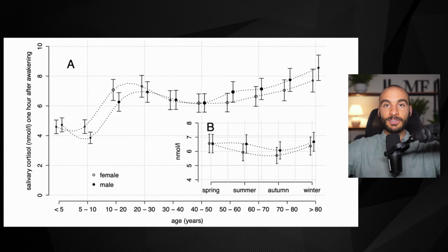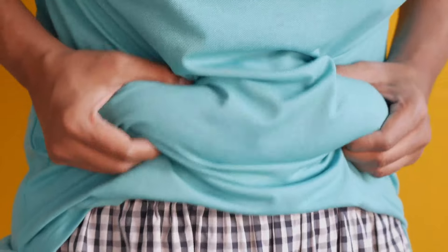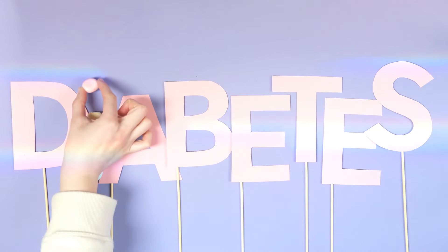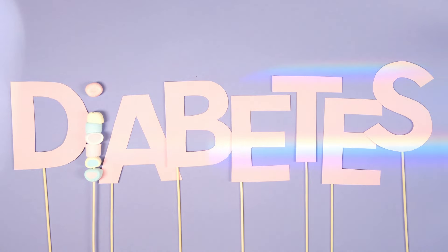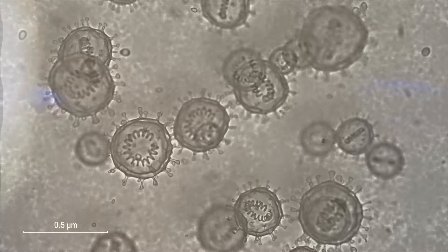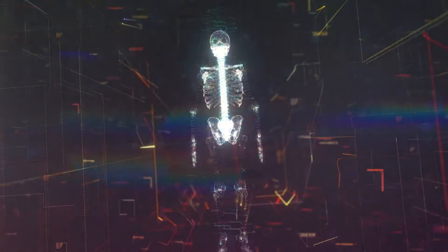This doesn't have to be the case, and we'll talk about how to manage it in a few minutes. From the research, excess cortisol can cause visceral fat gain — that fat around the belly — fatty liver, high blood pressure, insulin resistance and diabetes, immunosuppression making you more likely to get sick, and especially as you get older we see elderly people are more susceptible to infection. It can also cause bone loss, muscle loss.